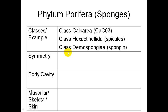The first phylum we're going to cover is Porifera. There are three classes: class Calcarea, class Hexactinellida, and class Demospongi. They're based on what their body is made of — their spicules — calcium carbonate versus regular spicules or spongin.